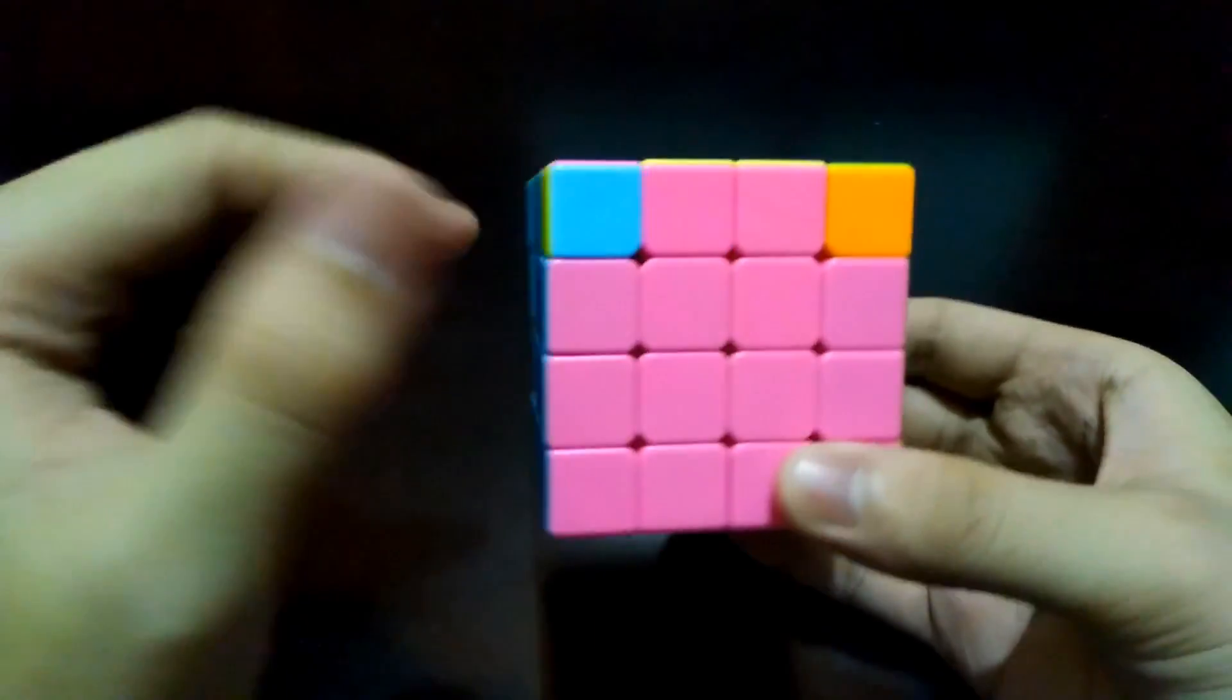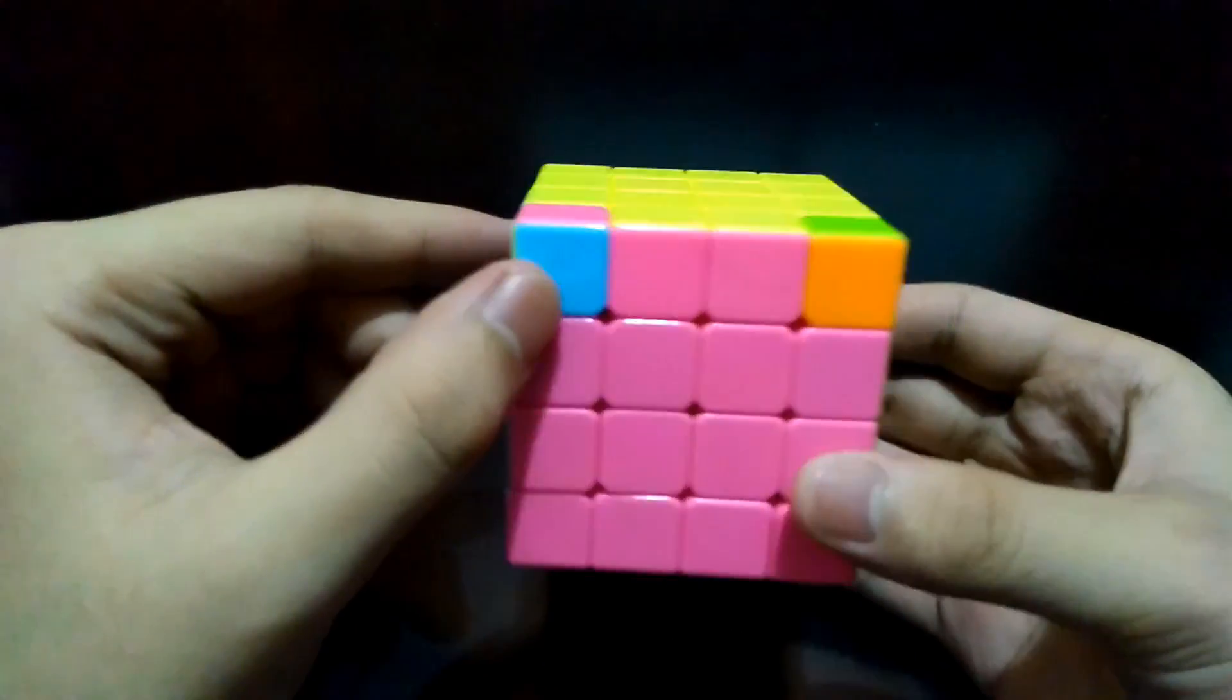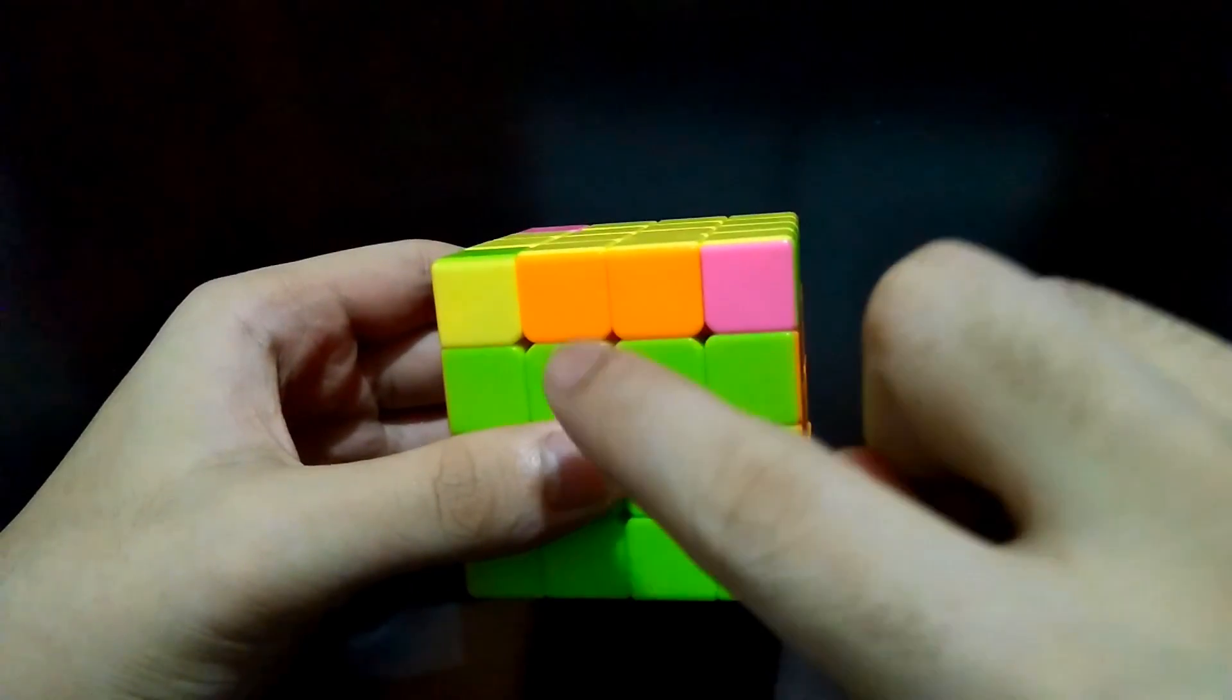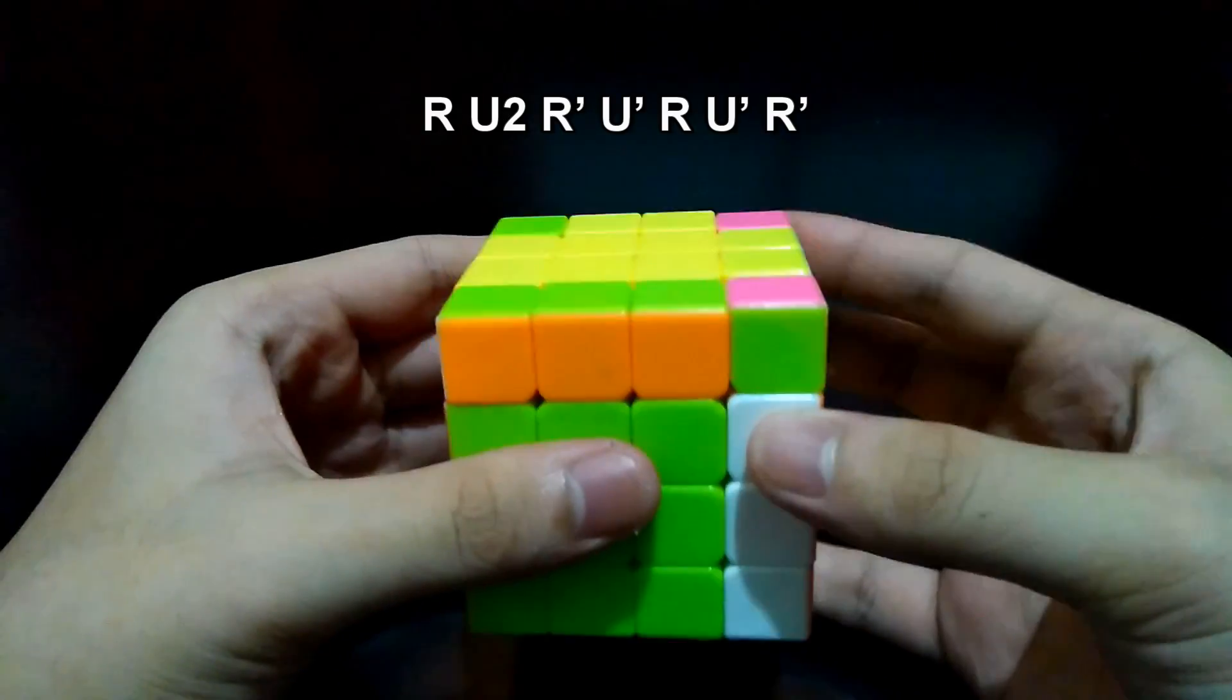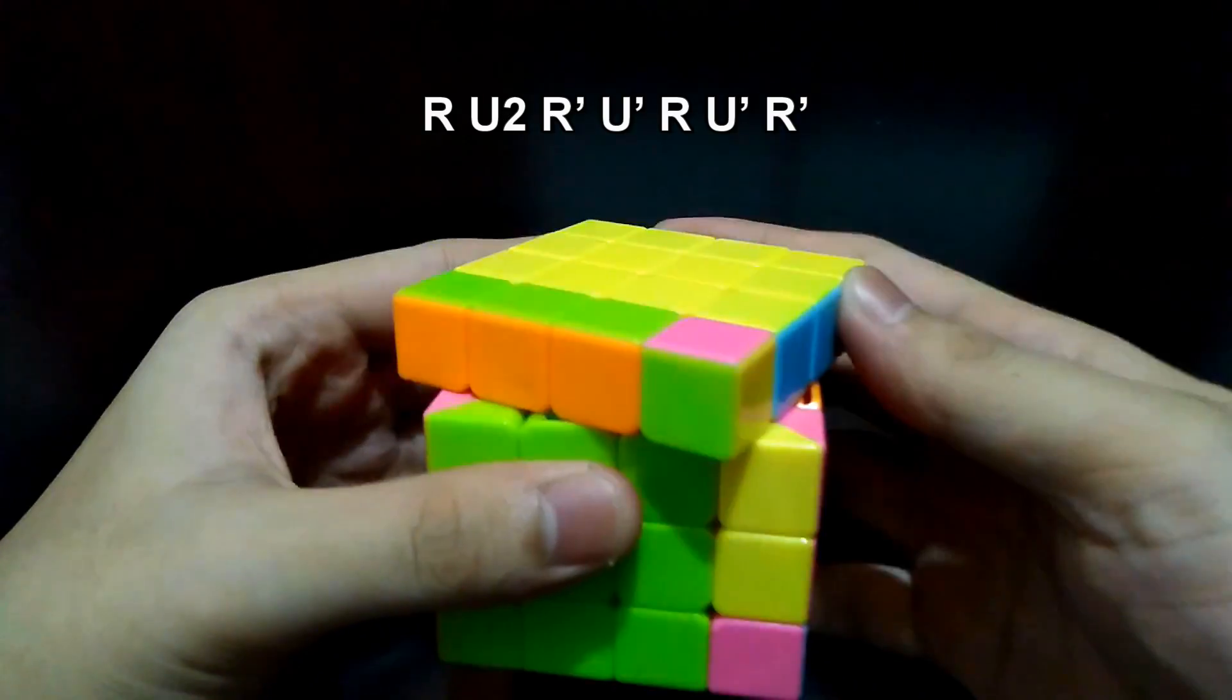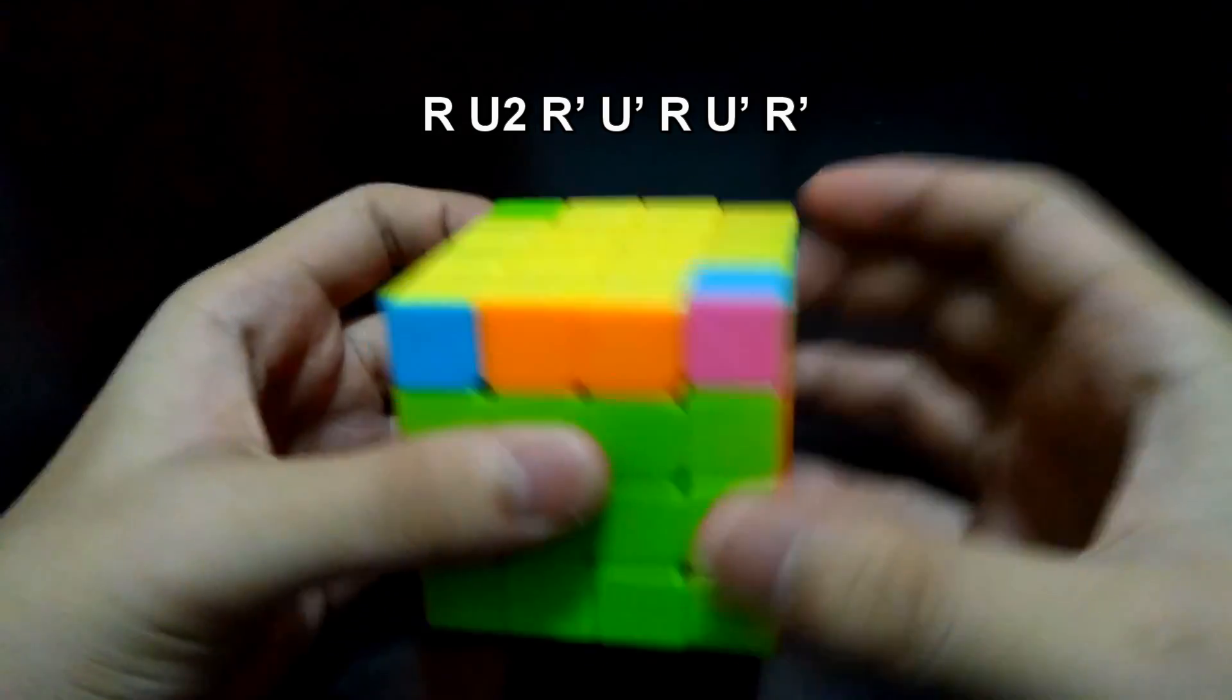Now these two correct corners are already next to each other. Facing correct one at the front and the other one at the right, same algorithm: Right, Up 180 degrees, Right prime, Up prime, Right, Up prime, and Right prime. And just turn the top side one more.